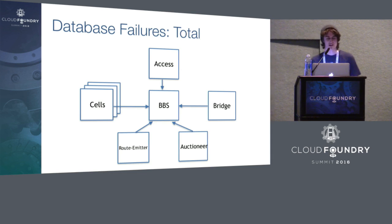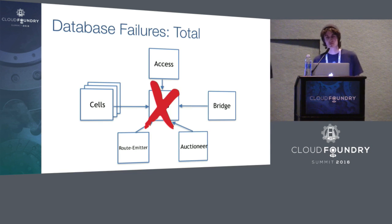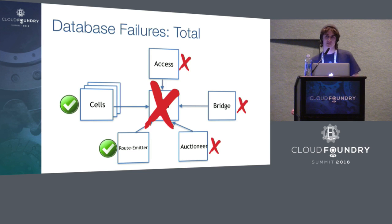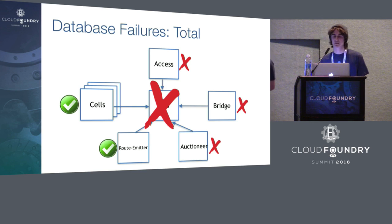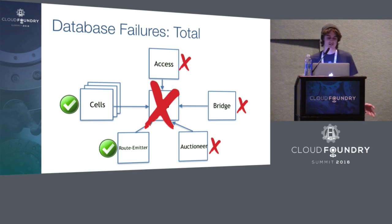The next failure we investigated was a total failure of the database node — essentially losing all of the data. We simulated this by removing the persistent store on the database node, just blowing away all the data. We saw similar results to the partial outage: cells and running applications continued to operate successfully and were routable. Once BBS functionality was restored, the cells immediately populated all running data back into the database, and the bulk batch processes took all definitions from Cloud Controller and put in the desired data as well. In about 10 to 15 minutes, we had restored all of the database data we had just deleted.